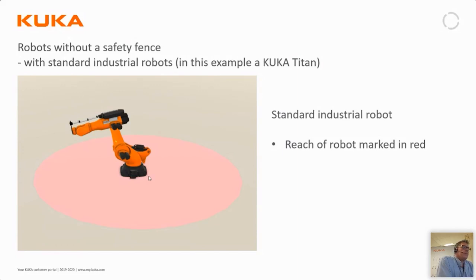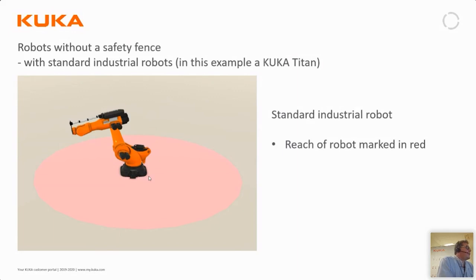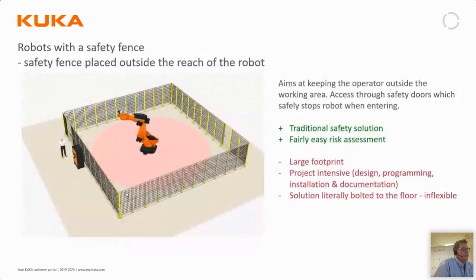I've made a small example for us to follow through this webinar, and to be clear the example is a bit exaggerated, so I've also chosen the largest robot we have: Titan. Basically we have a standard robot bolted to a concrete floor, and this robot will have a certain reach — a maximum reach — together with its tool and workpiece. This I have marked on the floor as a red circle.